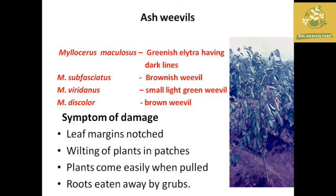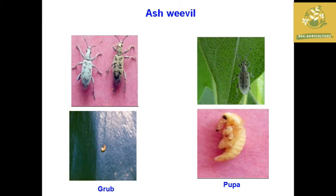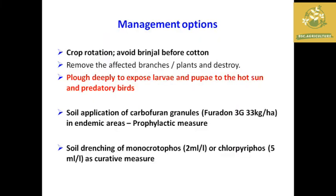There are 4 different species. Mylosaurs maculacentra species is greenish to brownish brown. Symptoms of damage include feeding at the leaf margin. Grubs feed on roots, making plants easy to pull out. Management includes crop rotation and soil application of monocrotophos granules.